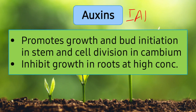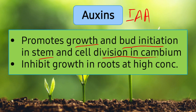Auxins — also known as indole acetic acid (IAA) — are growth stimulators, meaning their job is to increase growth. They increase and promote growth in stems as well as in roots. They also initiate bud formation, meaning rapid growth occurs in regions where buds are forming. They also cause cell division in cambium, increasing the girth of the stem. In roots, auxins stimulate growth at low concentration, but at high concentration they inhibit root growth.